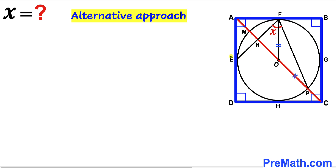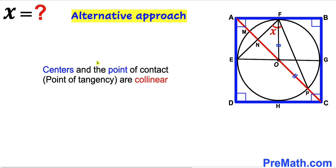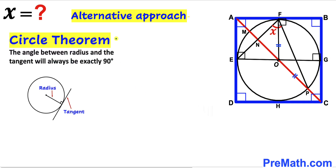Now let's connect points E and G. Recall the key fact: the center and the point of tangency are collinear, so points E, center O, and point G lie on the same line. By the circle theorem, the angle between a radius and a tangent line is always exactly 90 degrees.